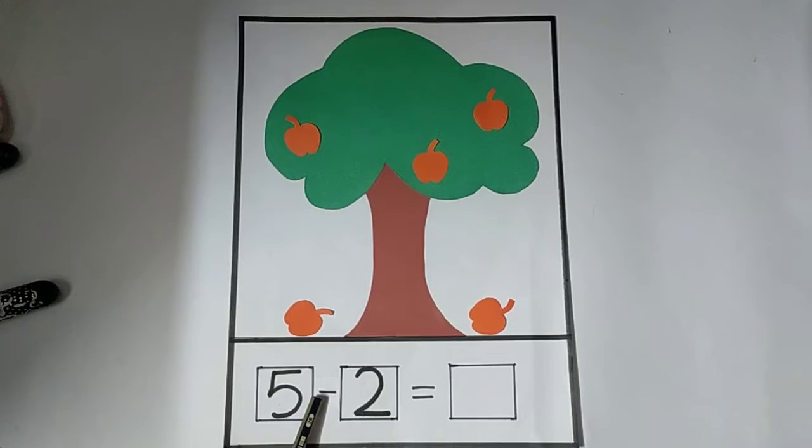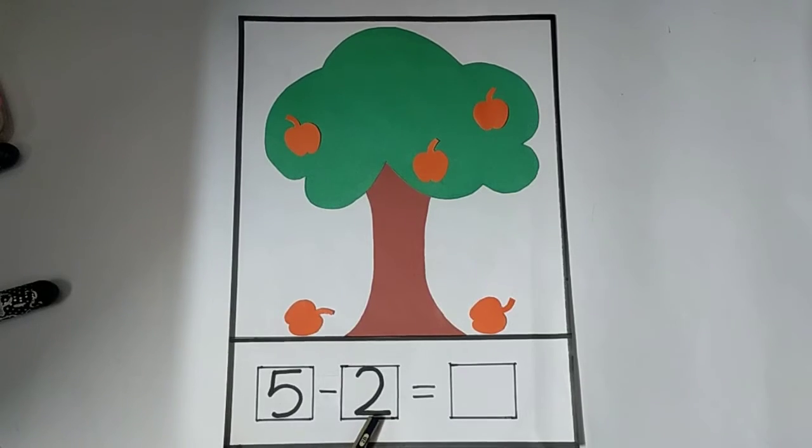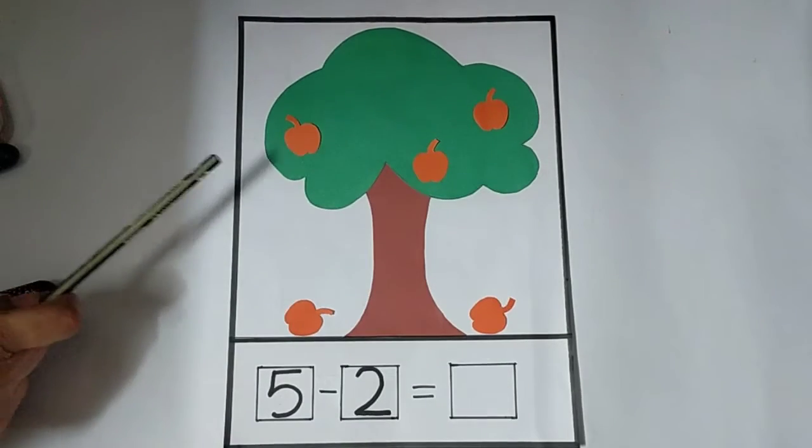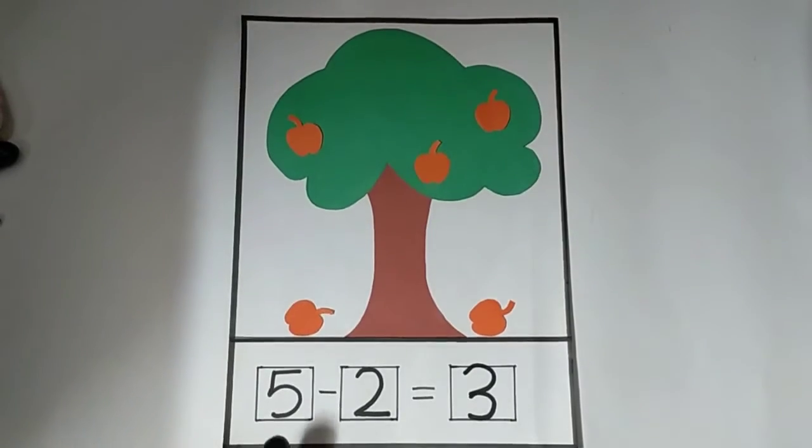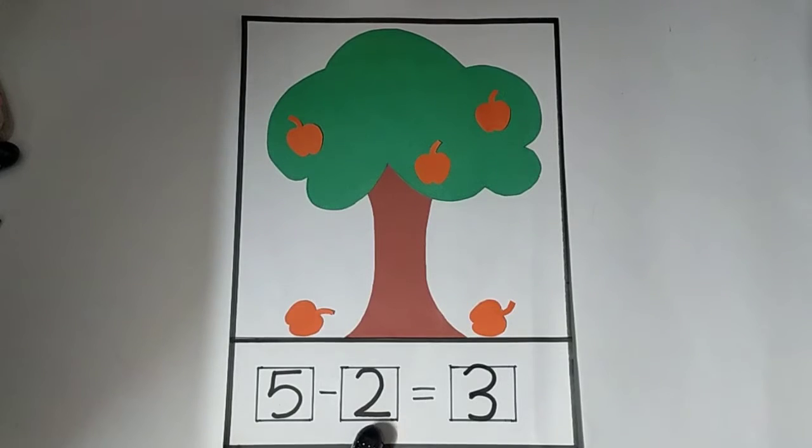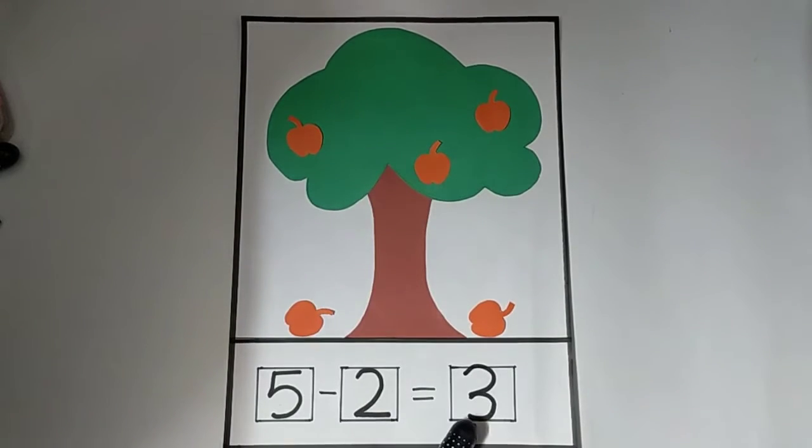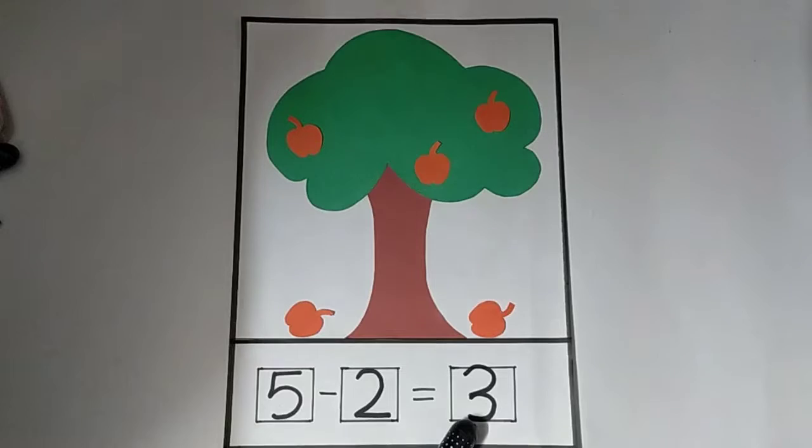So, five minus two. So, how many left? One, two, three. So, five minus two equals to three. Okay, do you want to do another one?